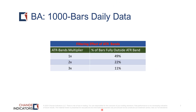This chart summarizes the effects of filtering and why filtering can be very valuable using bands. With about a thousand bars of daily data and a 1x multiplier, 49 percent of the bars were fully outside the bands — meaning the low was above the outer band and the high was below the lower band.